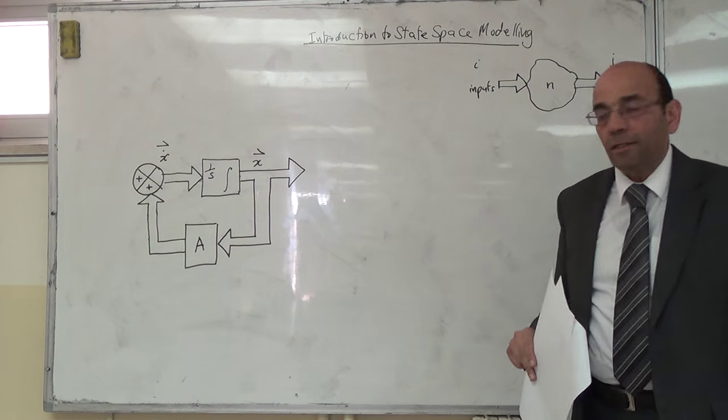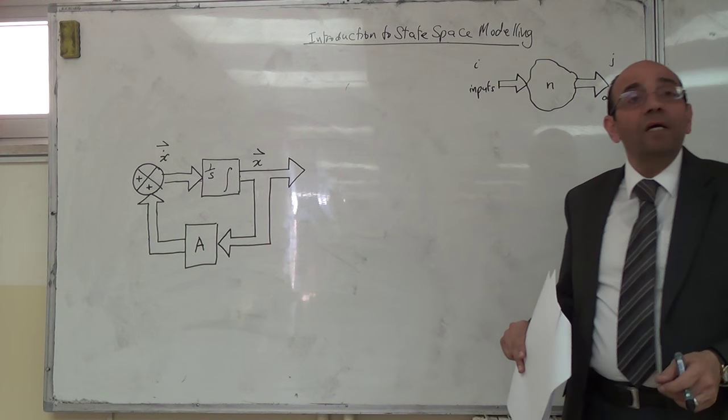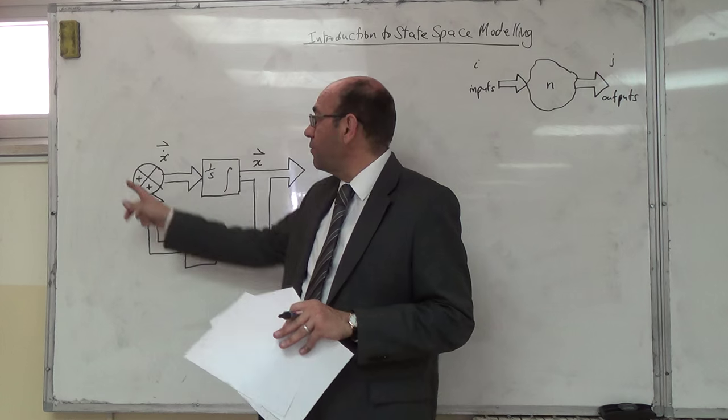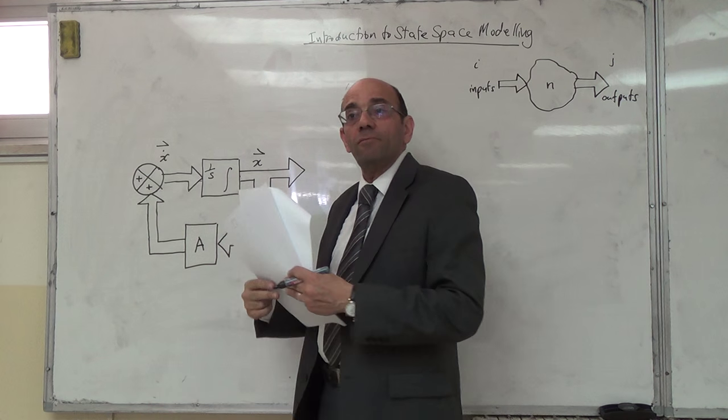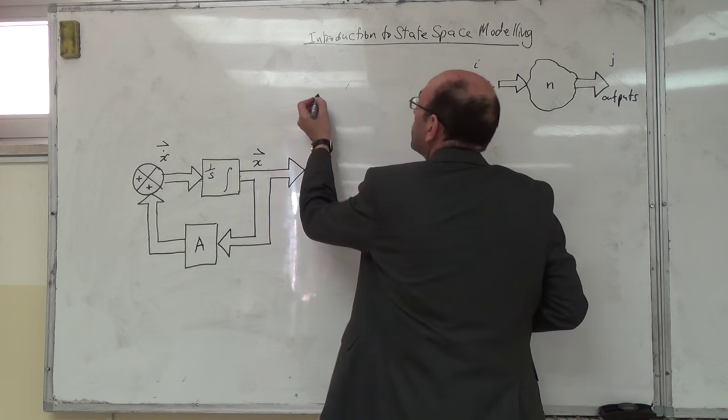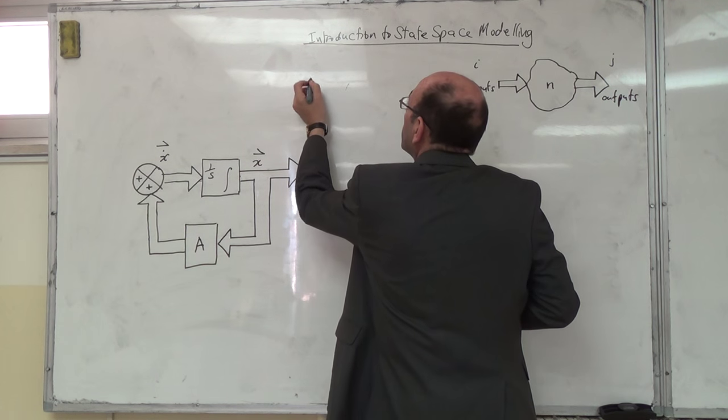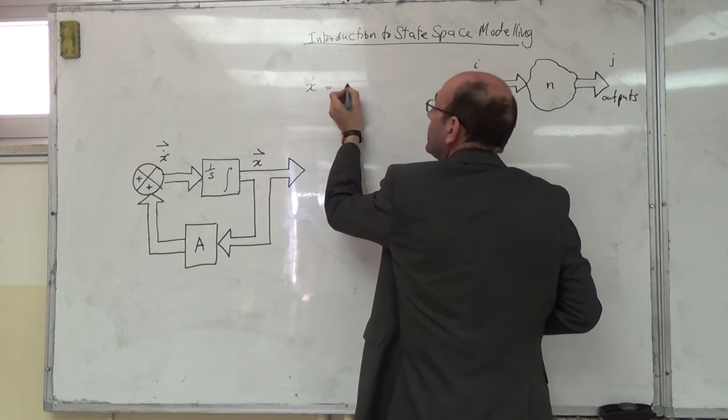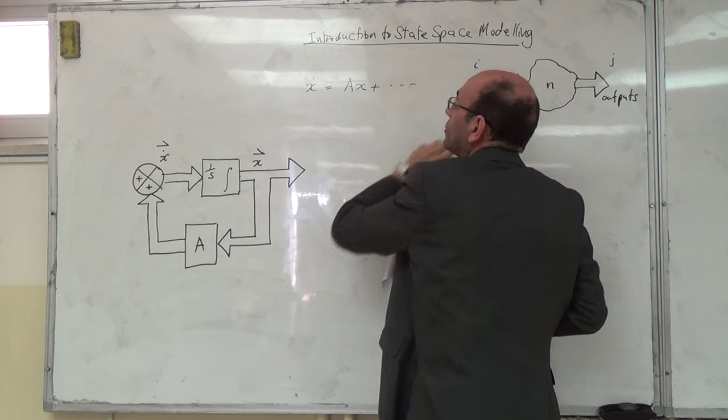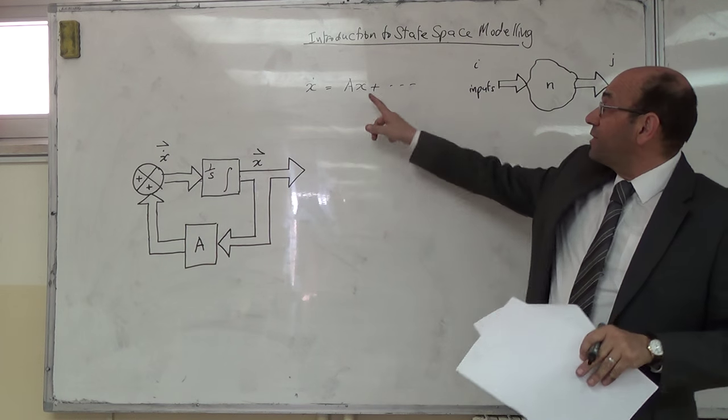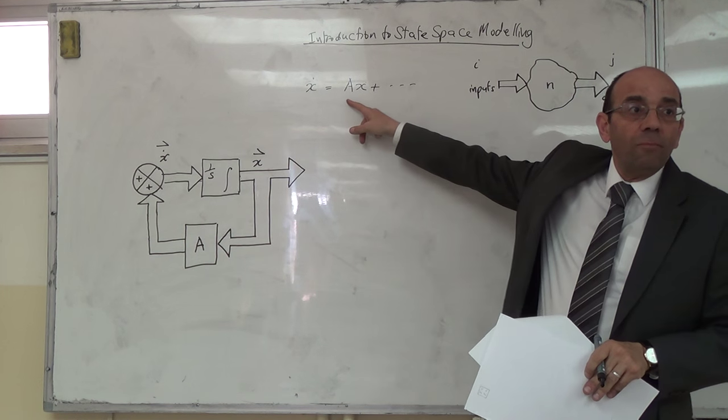تمام هلأ هي ايه يعني. رح أضرب x dot رح تساوي فيه شيء رح يجي من هون زائد A في x. هلأ بنطلع ع الـ dimensions. x dot بدها تساوي A مضروب في x زائد اشي تاني. مش هدول كل هون gain A؟